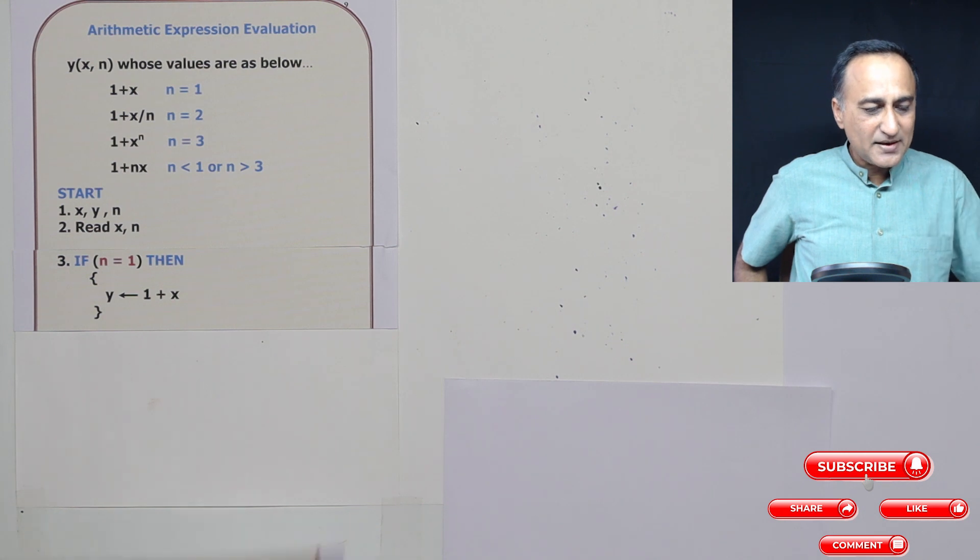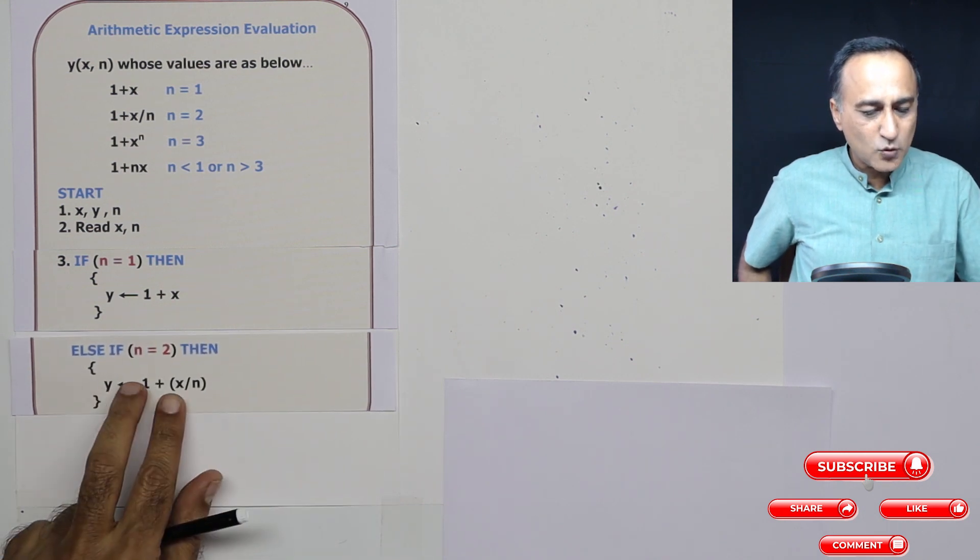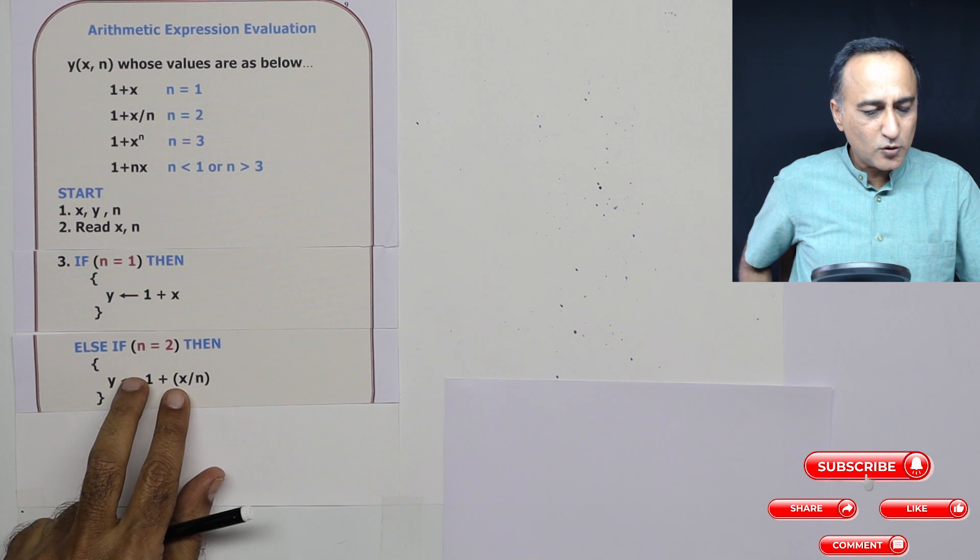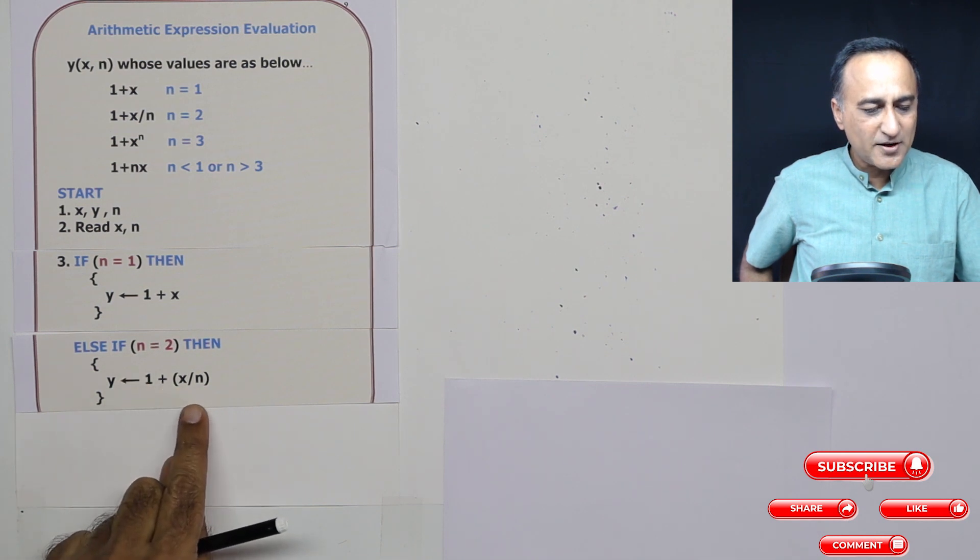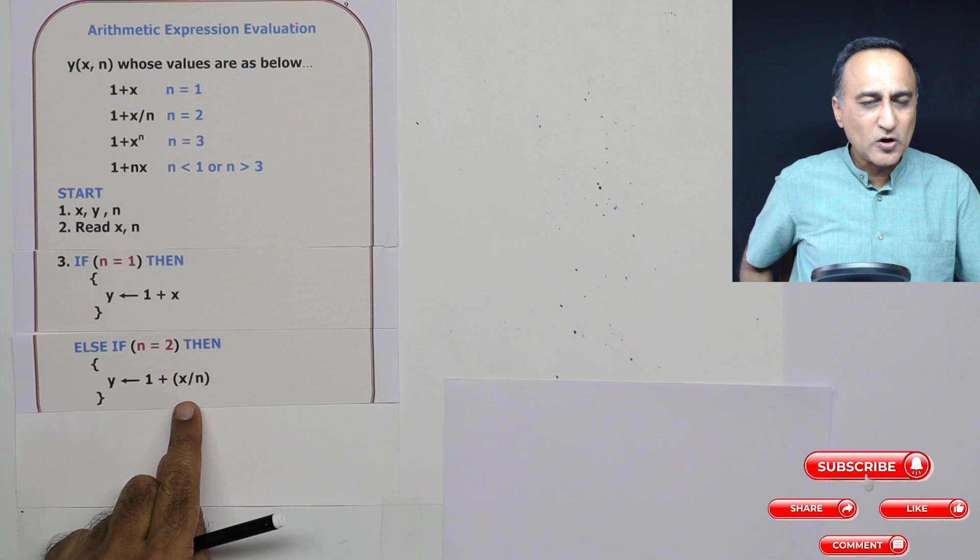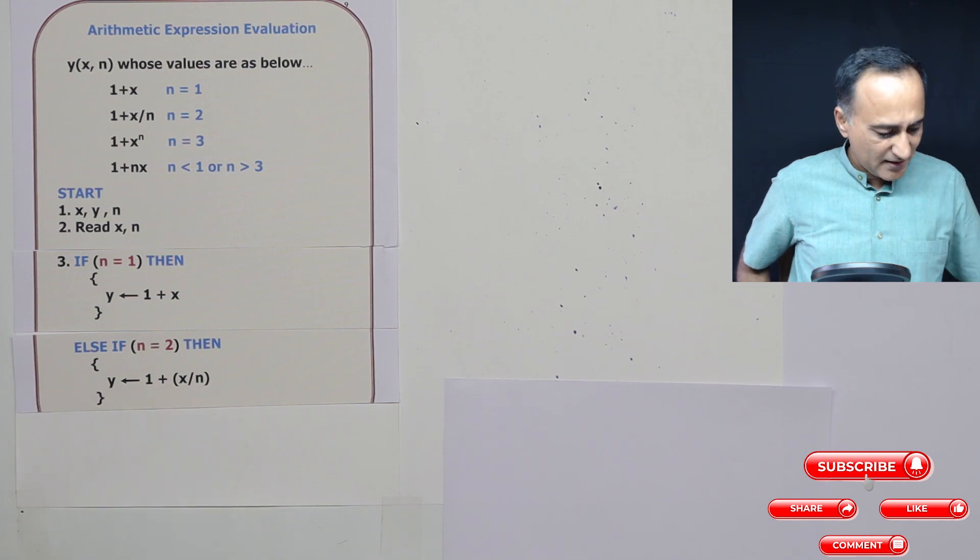Then the second possibility is n is equal to 2. If n is equal to 2, then y is 1 plus x divided by n. Bracket is not required, but I have just put it so it's really clear.